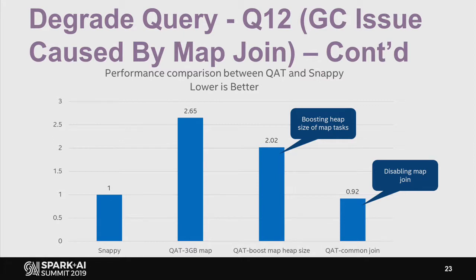To fix the GC issue, one easy solution is to simply increase the heap size — we can still see lower execution time compared with Snappy. A second option is to disable map join in such cases; after disabling map join, the execution time is still lower than Snappy.